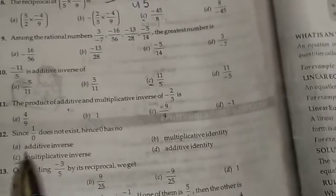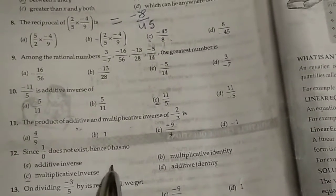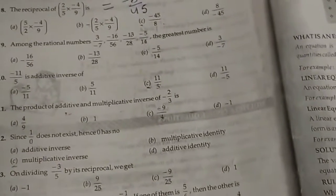Multiplicative inverse is minus three by two, and their product is minus one. Next one is since one by zero does not exist, so zero has no multiplicative inverse.